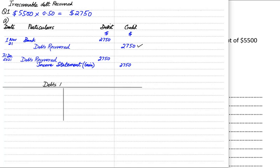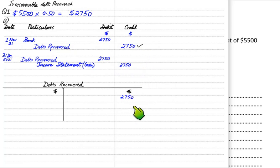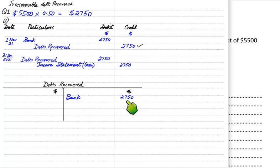The question also asks us to make a T-account or ledger account. In the first entry the debts recovered account was credited because it is an income account — income is always credit in nature — and the reference written is 'bank'. Then at year-end we debit the debts recovered account and transfer the balance to the income statement.